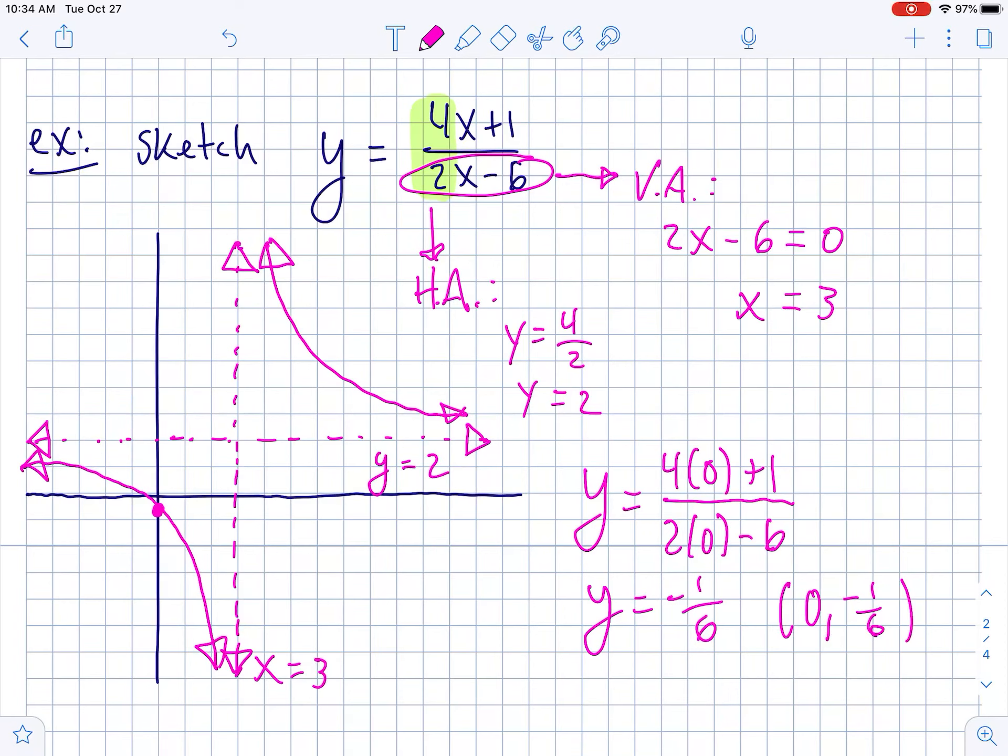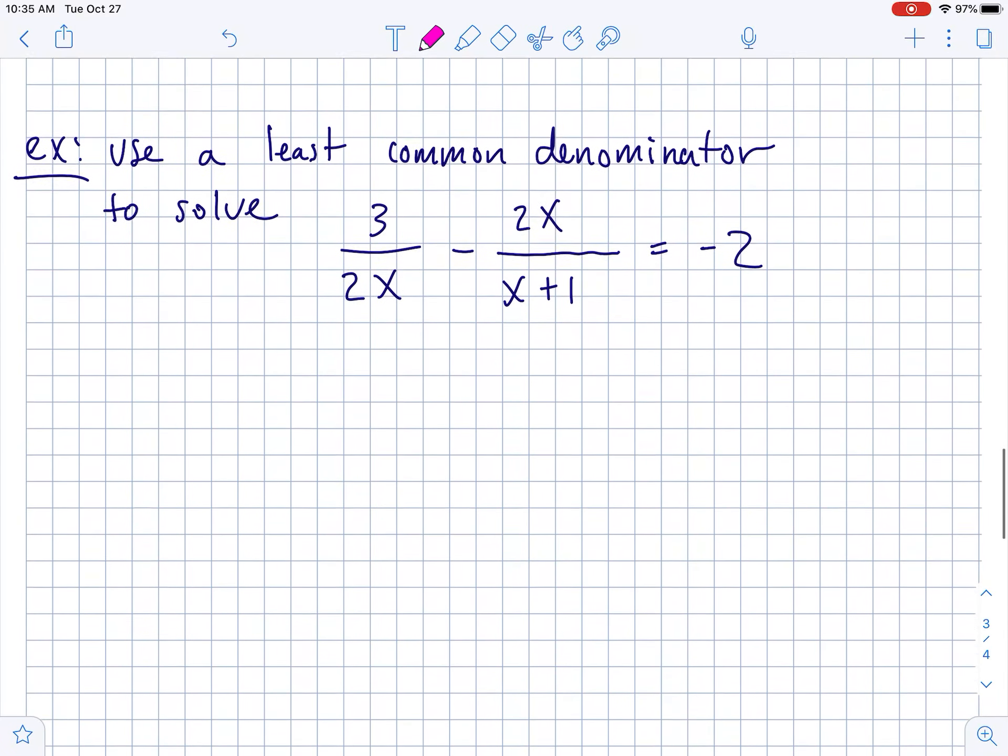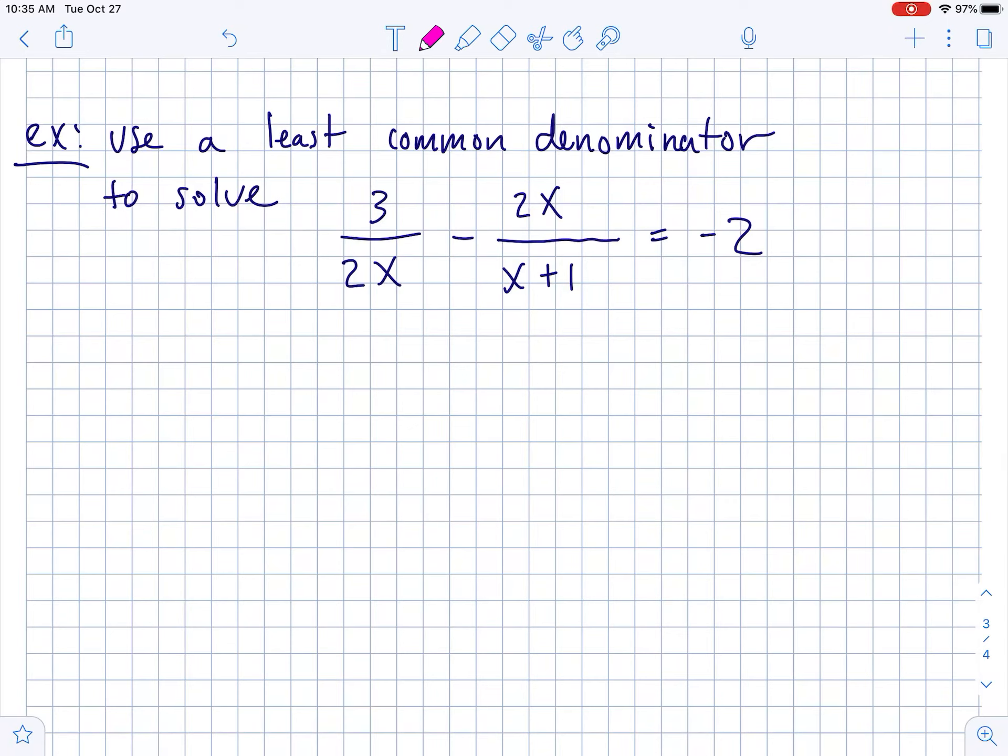I think this is sufficient to be a sketch of this function because I've labeled my asymptotes, I found one intercept, the cobwebs are in the right corners. If it just says sketch, I think this is fine, totally good. So, test a point, figure out where your cobwebs are, they're always opposite corners. Well, with linear over linear.